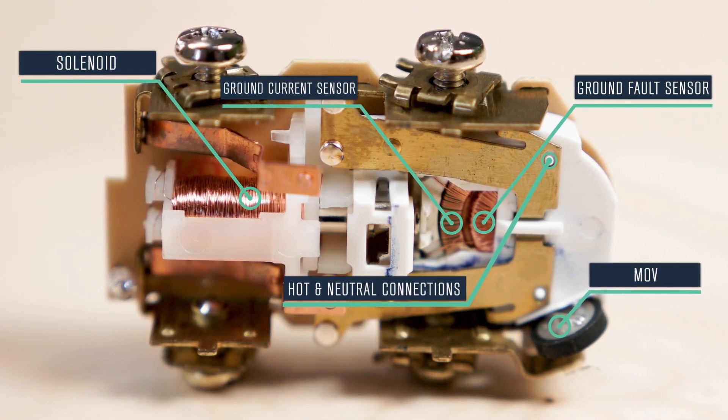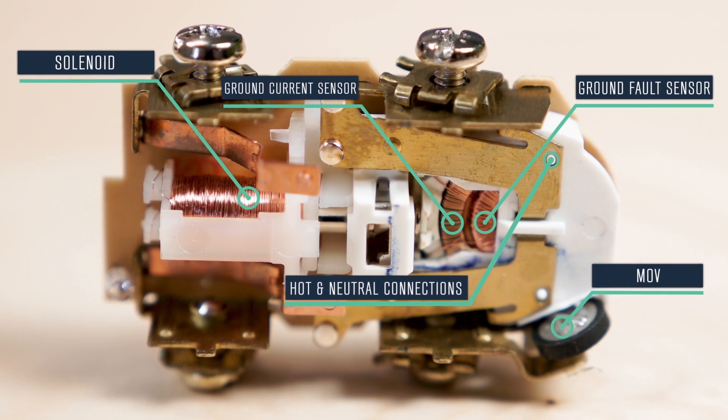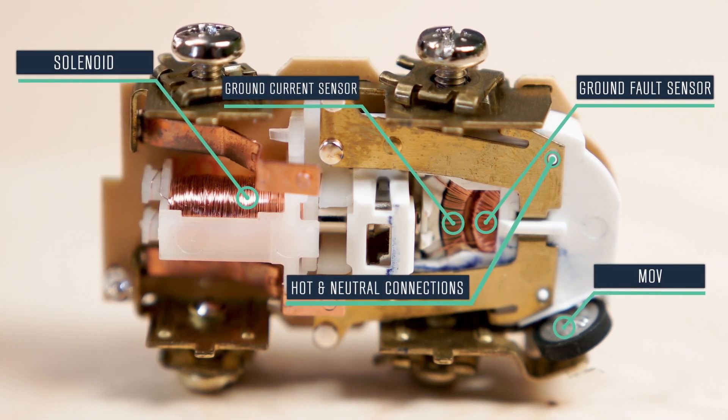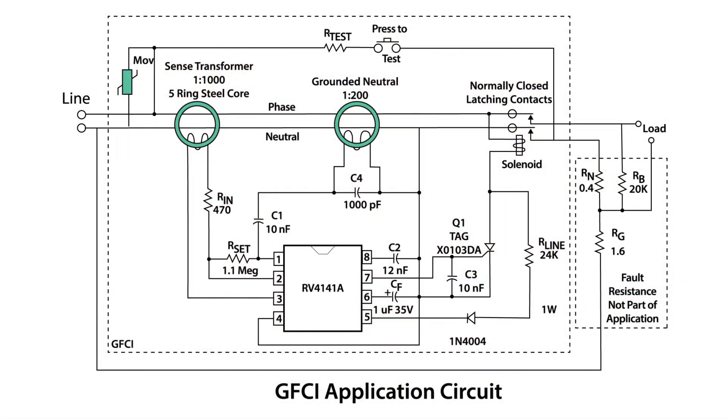The point of the second toroid is to sense current flowing from ground to neutral rather than a difference in the line and neutral current. Some online commentators don't understand how current can flow in the ground lead without causing a difference in the hot neutral current that the first toroid would sense.